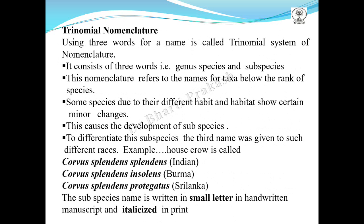To differentiate these subspecies, a third name is given. For example, Corvus splendens splendens is the scientific name for the Indian crow; Corvus splendens insolens is the name for the house crow in Burma; and Corvus splendens protegatus is the name in Sri Lanka. The subspecies name is written in small letters when handwritten and italicized when in print.